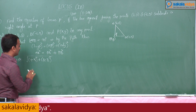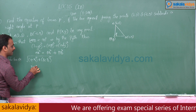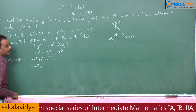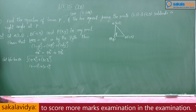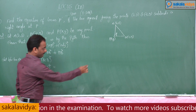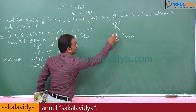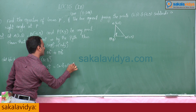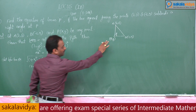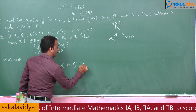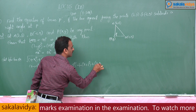AB squared equals (2 minus (-1)) whole square plus (3 minus 5) whole square. PA squared equals (x minus 2) whole square plus (y minus 3) whole square. PB squared equals (x plus 1) whole square plus (y minus 5) whole square.